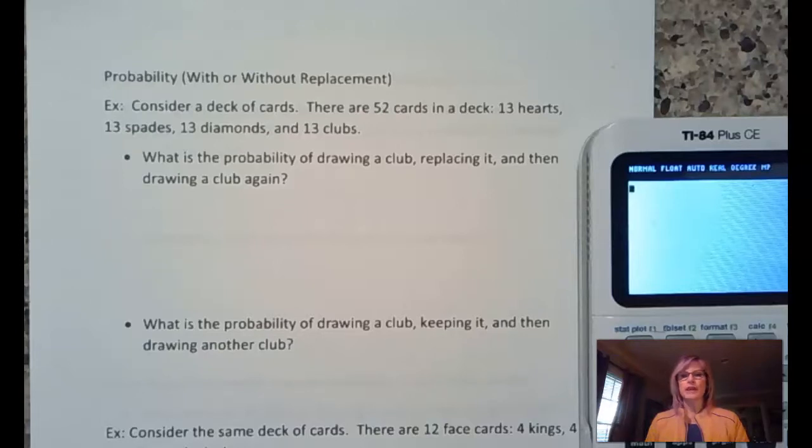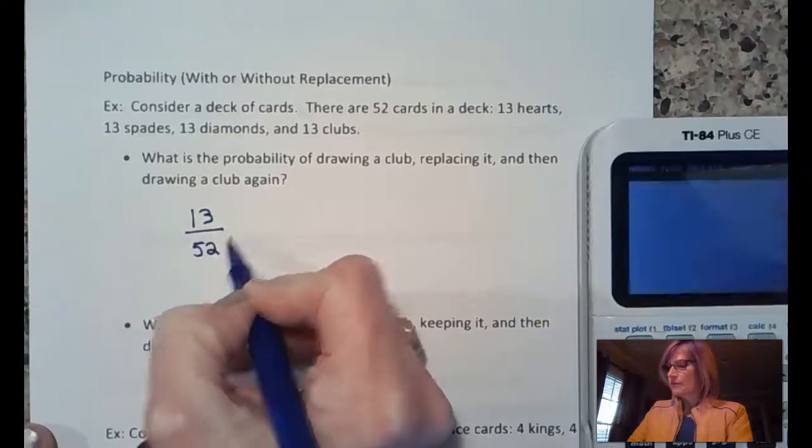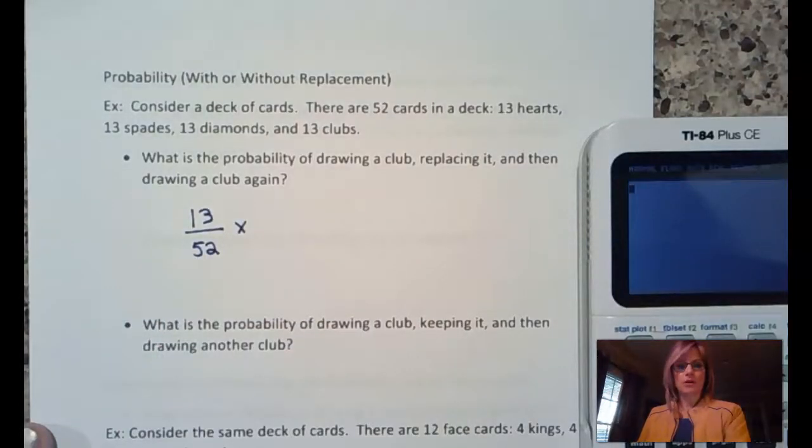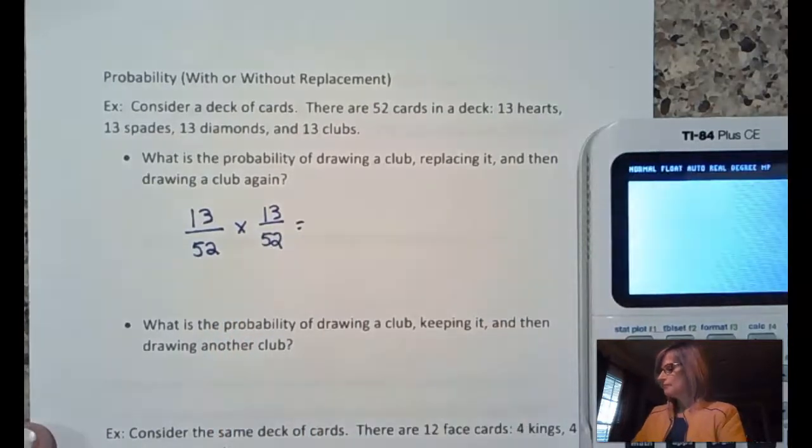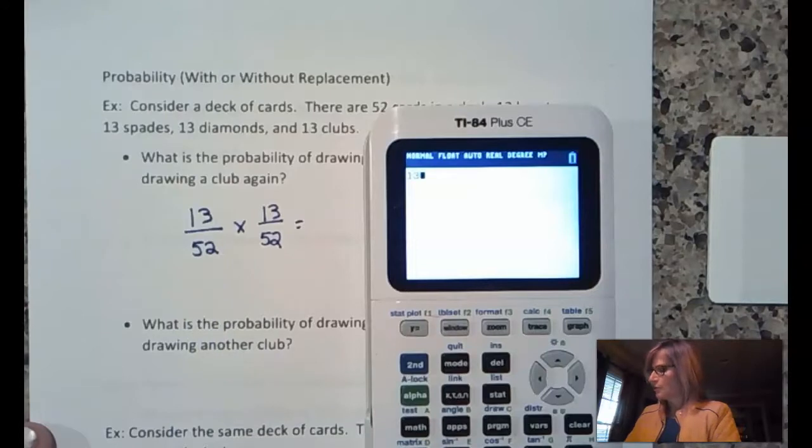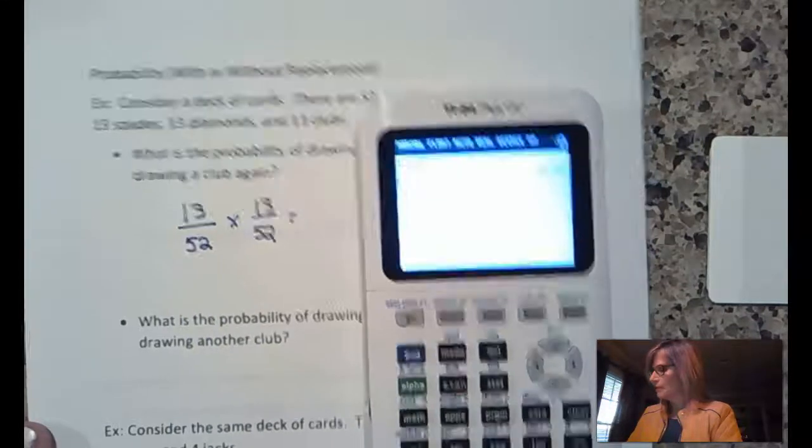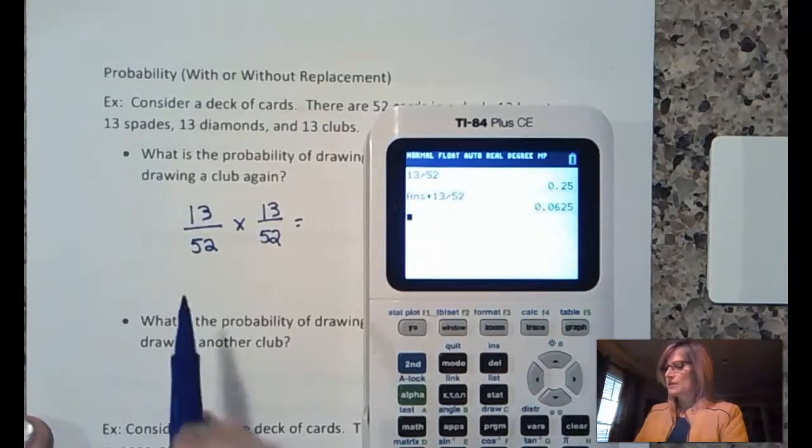First of all, this is the multiplication rule. It's the probability of one event followed by another event or maybe two or three events, but they're one right after another. So, drawing a club, there are 13 clubs out of all 52 cards, and then you pick the club and then you put it back. So, there are still 13 clubs out of 52 cards, and we can multiply that together. You could reduce that and say one-fourth times one-fourth, or you could say 13 over 52 times 13 over 52 and get 0.0625.